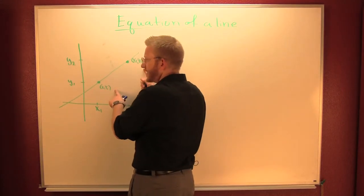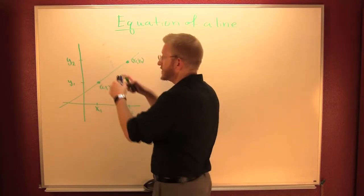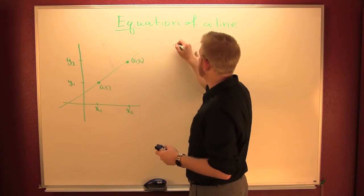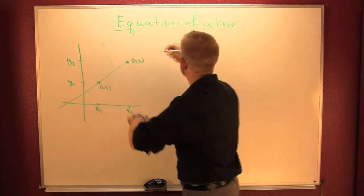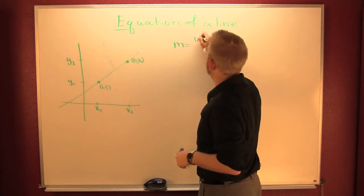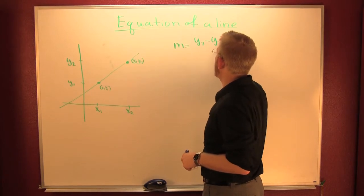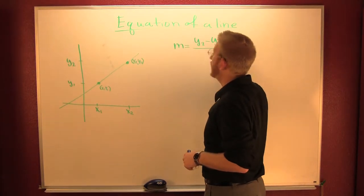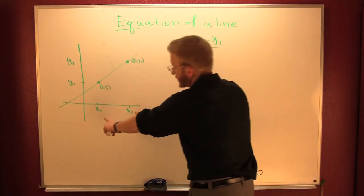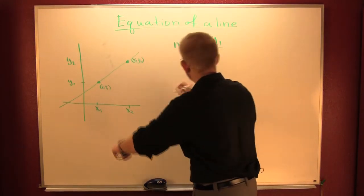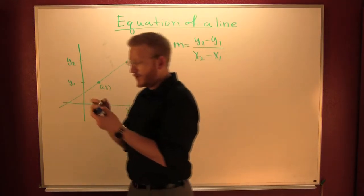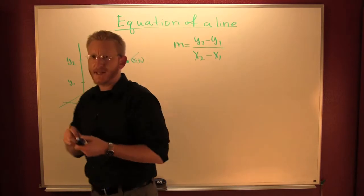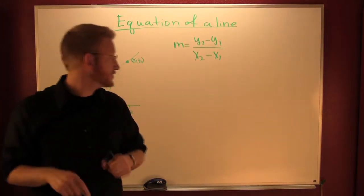Earlier we had up a diagram like this, and we know slope is my change in y — y2 minus y1 — over my change in x, x2 minus x1. If you want to see that, look up slope number one.